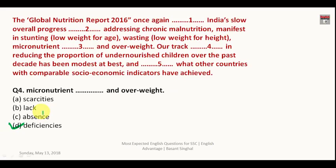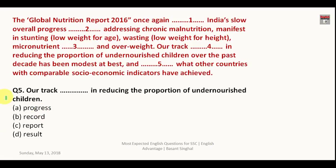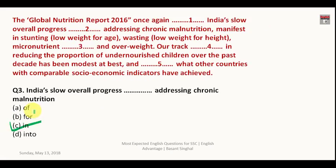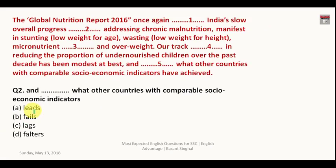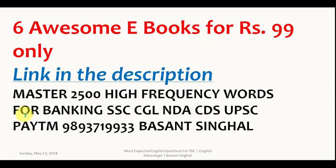'Track' is always followed by 'record' — 'our track record in reducing the proportion of undernourished children over the past decade has been modest at best.' Our progress lacks what other countries with comparable socio-economic indicators have achieved. The answer is C.